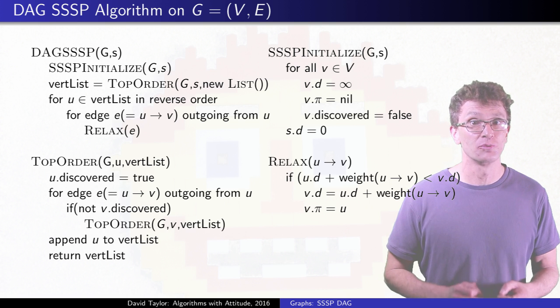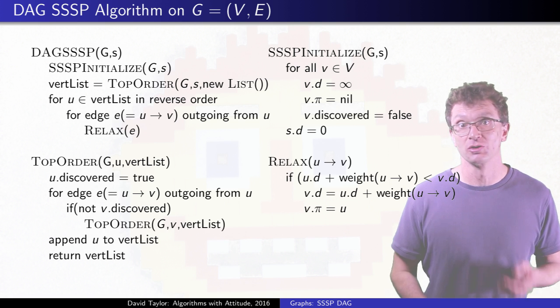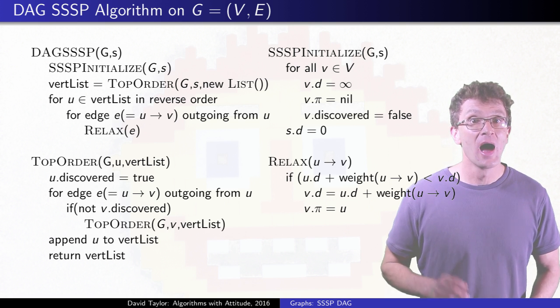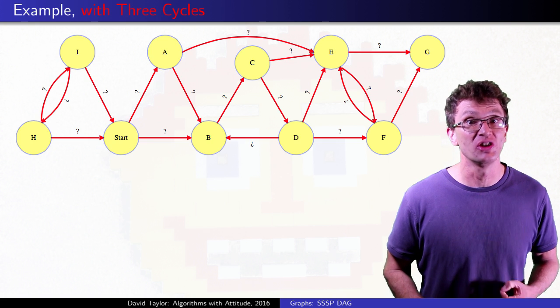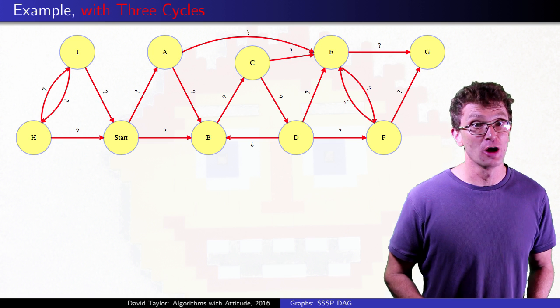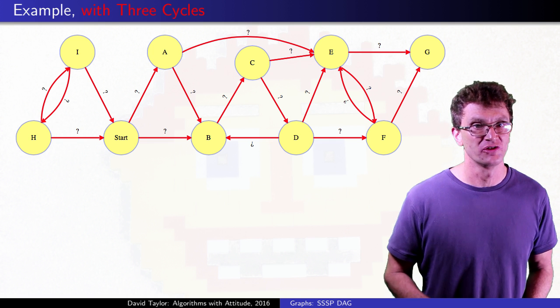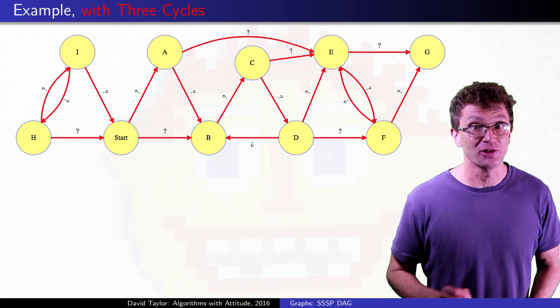If you are making a library routine that is required to reject inputs with cycles, you can run depth first search, look for back edges, and if you find one, reject the graph. Instead, I am actually going to run this on an example graph with three cycles to see what happens. I hope it will help you understand how the algorithm works and why it might go wrong with cycles. I will show you the edge weights for an edge when it gets relaxed.